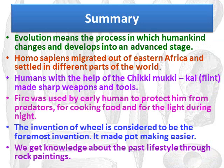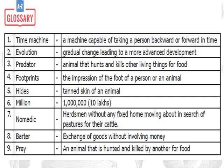Now let us see the summary of the lesson. Evolution means the process in which humankind changes and develops into an advanced stage. Homo sapiens migrated out of eastern Africa and settled in different parts of the world. Humans used flint stone (chikimuki kal) to make sharp weapons and tools. Fire was used by early humans to protect from predators, for cooking food, and for light during the night. The invention of the wheel made pot making easier and is considered the foremost invention. We get knowledge about past lifestyle through rock paintings.